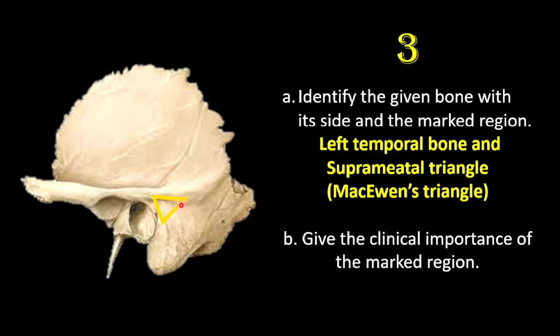The clinical importance of the suprameatal triangle is that the mastoid antrum lies about 1 to 1.25 centimeters deep to this triangle. In the newborn, the distance between the mastoid antrum and the triangle is only about 2 millimeters. This distance increases by about 1 millimeter each year until the adult position is reached.